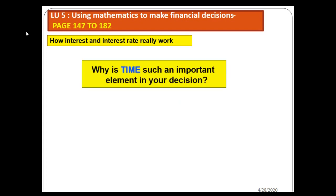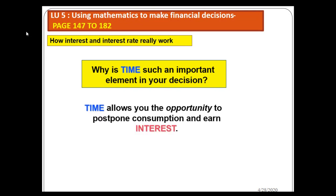Why is time such an important element in your decision? We normally say time is money — it is true. Time is very much important. Time allows you the opportunity to postpone consumption and earn interest. For example, if you have fifty thousand now, instead of buying cars you don't need, why not invest that money so that after seven years you have that money together with the interest? That's why time is very much important.